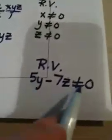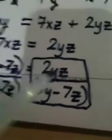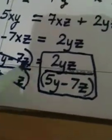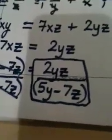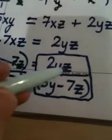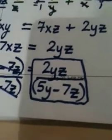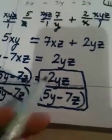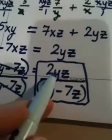Sometimes I have students get this far and then they start doing what I call silly canceling, where they'll say, 'Oh look, this y cancels with this y,' or 'this z cancels with this z.' The reason you can't do that: the numerator 2yz is separate factors.